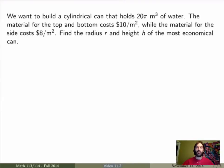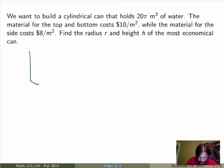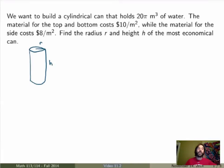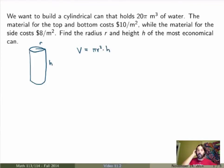So that's a typical problem someone working in business could face. The first thing, as always, is to write the problem carefully and draw a diagram if necessary to help understand what's going on. In this case we're building a cylindrical can, and the properties are given as the radius and the height. We know that the volume of a cylinder is given by the area of the circle, π r squared, times the height. The volume is fixed and equal to 20π meters cubed.